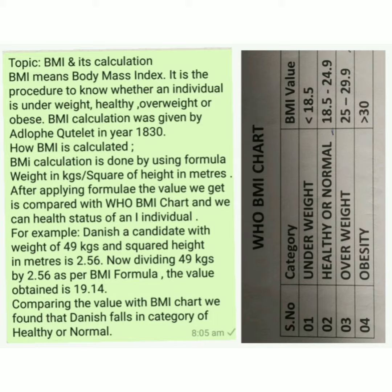BMI calculation was given by Adolphe Quetelet in the year 1839. How is BMI calculated? BMI calculation is done by using the formula: weight in kilograms divided by the square of height in meters.